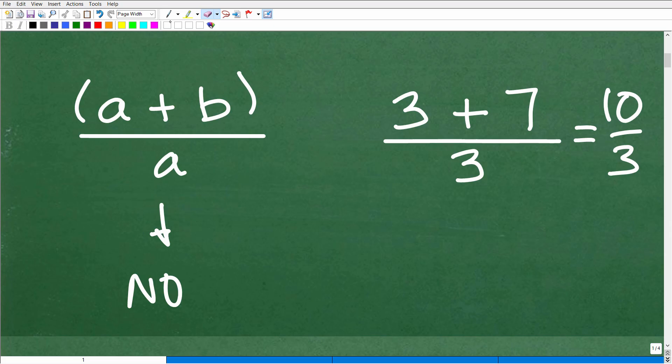But anyways, don't feel so bad, again, if you made this error. Let's take a look at a couple examples. By the way, again, with this particular problem here, if you were going to simplify it, this would be a better answer than just leaving it as 3 plus 7 over 3.